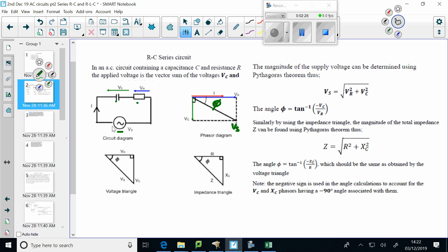So, mathematically, we can find VS using, or the magnitude of VS, how big it is in volts, from Pythagoras' theorem, which is the square root of VR squared plus VC squared, and then we can find the angle using the inverse tan with those values. We can find the impedance from the square root of R squared plus XC squared, and again, that same angle, whether you're using the voltage triangle or the impedance triangle, we can find using the inverse tan with XC and R.